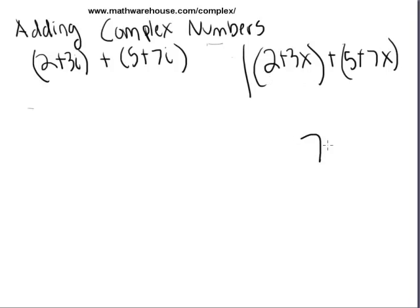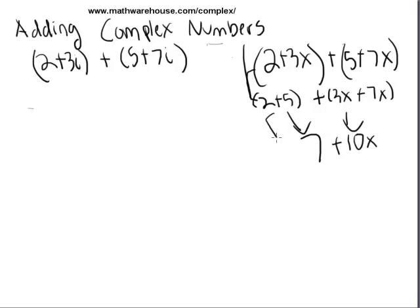You probably know it just becomes 7+10x, but let's break it down into steps and explain it mathematically, because what you do to this problem is analogous to how we're going to solve 2+3i plus 5+7i. What you're really doing is grouping the like terms, 2+5, and then grouping the x's, 3x+7x. Since it's addition, we can rearrange and regroup as we want, and then we're simplifying the like terms. 2+5 becomes 7, 3+7x becomes 10x. So this is really a two-step problem: regroup, then simplify.